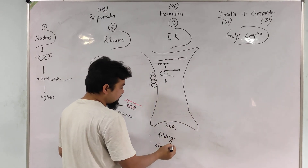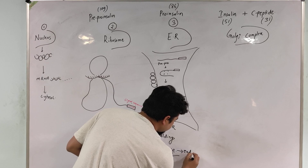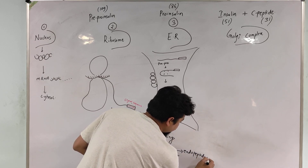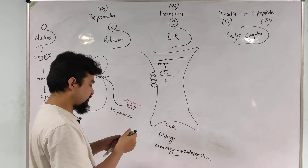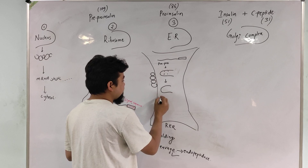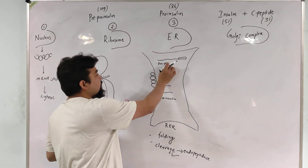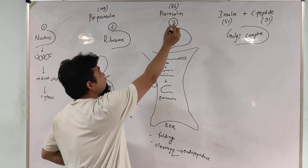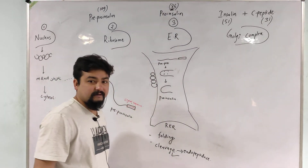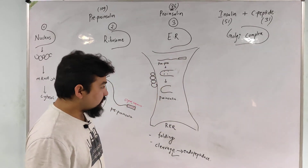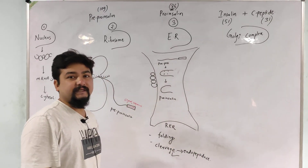In the endoplasmic reticulum, pre-pro-insulin gets converted to pro-insulin containing 86 amino acids. This is the third site. Now, coming to the final site — the Golgi complex — the pro-insulin needs to be transported to the Golgi complex to give mature insulin. There is formation of a bud and a bridge between the Golgi complex and the endoplasmic reticulum, and finally pro-insulin gets transported to the Golgi complex.